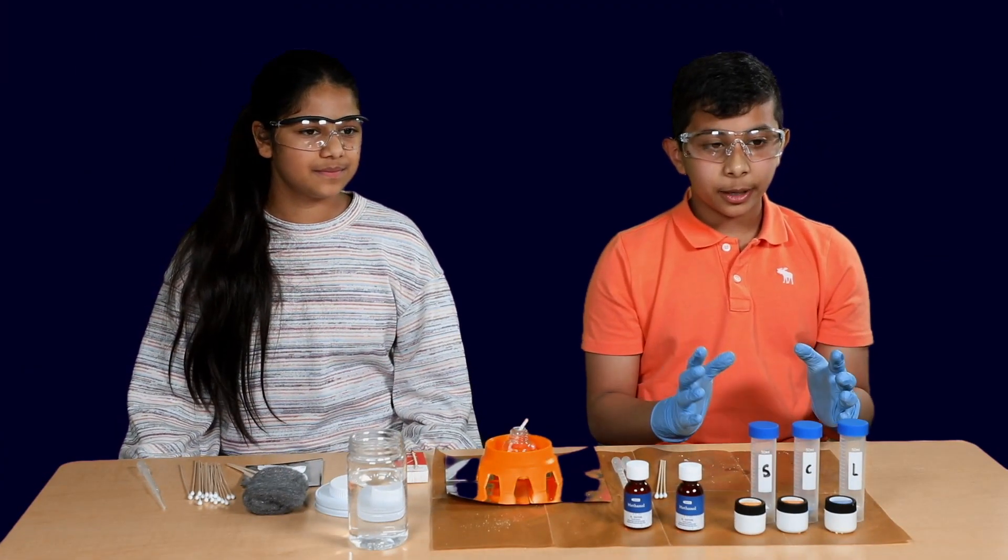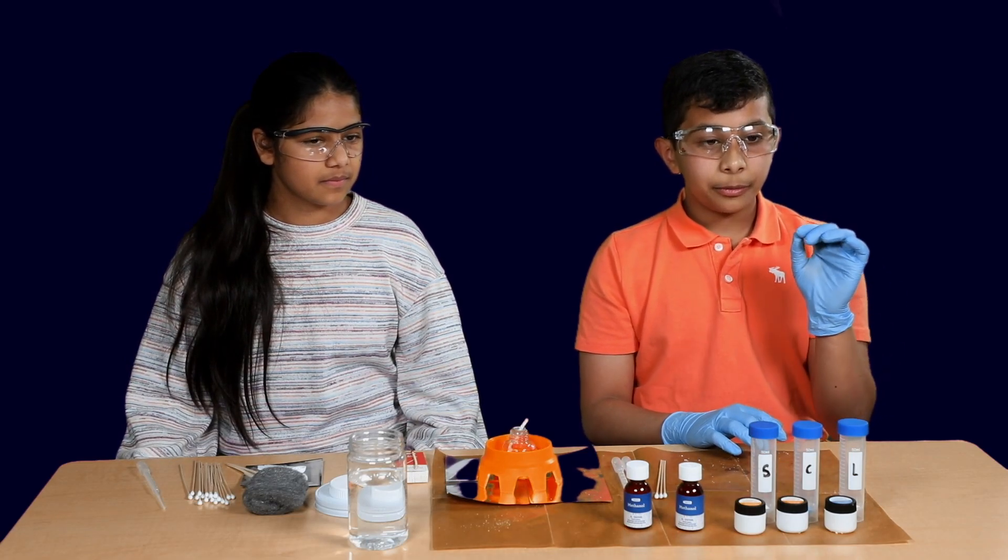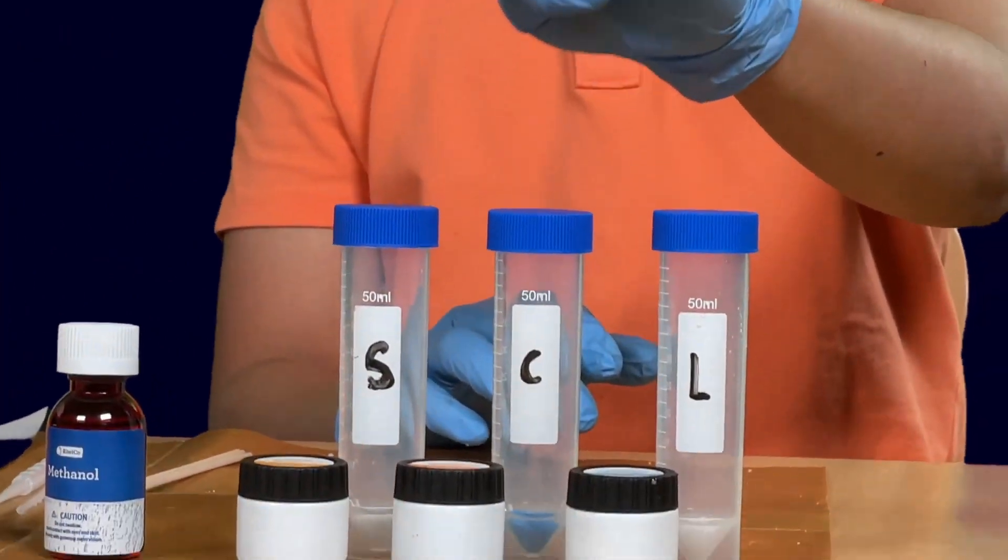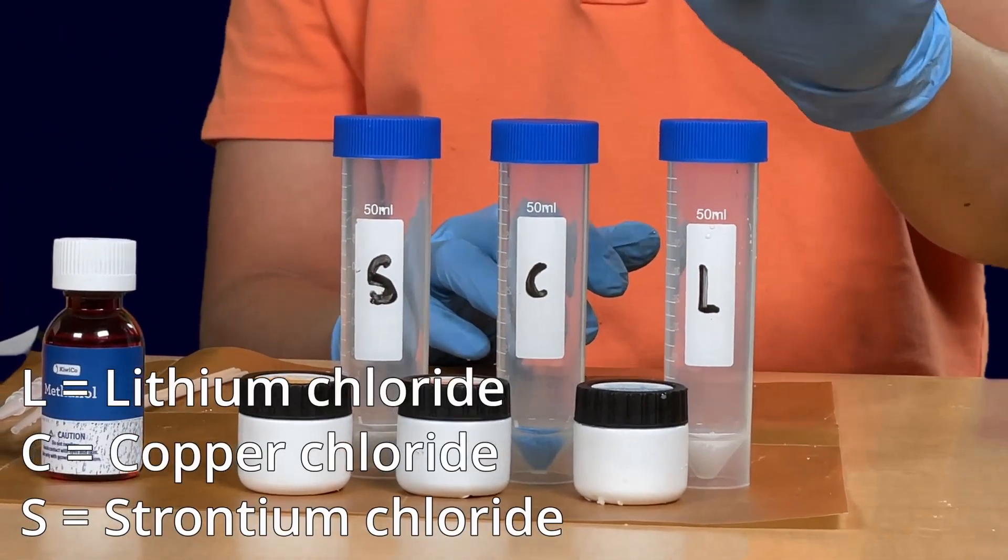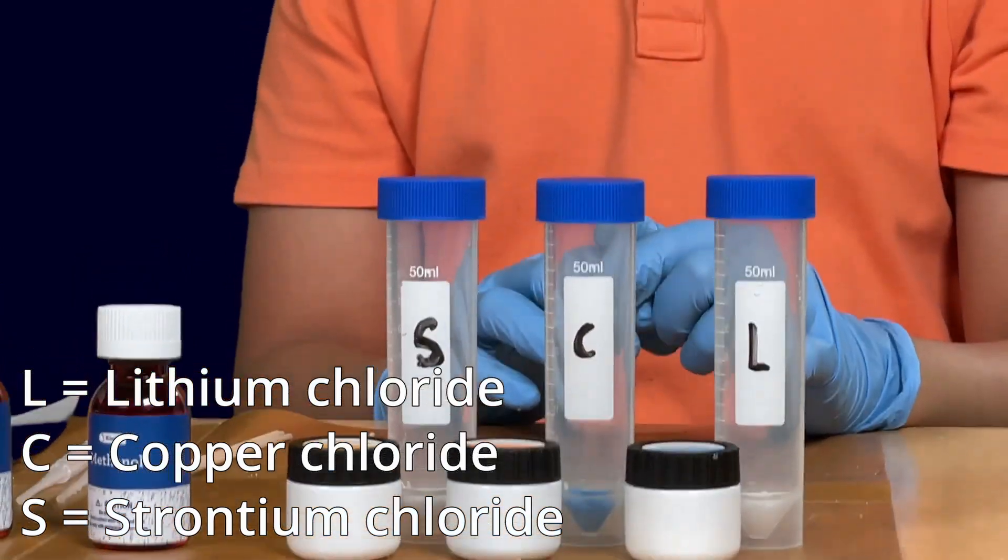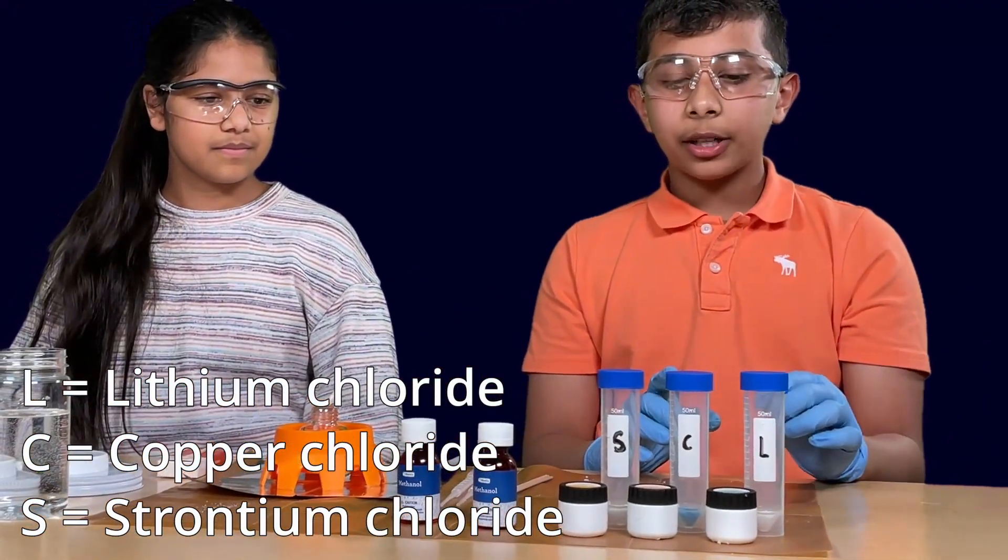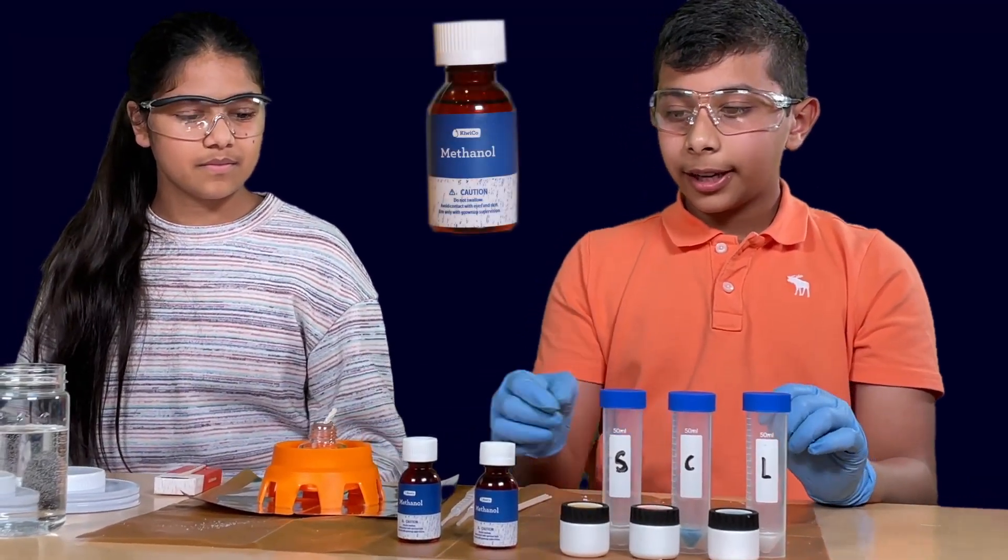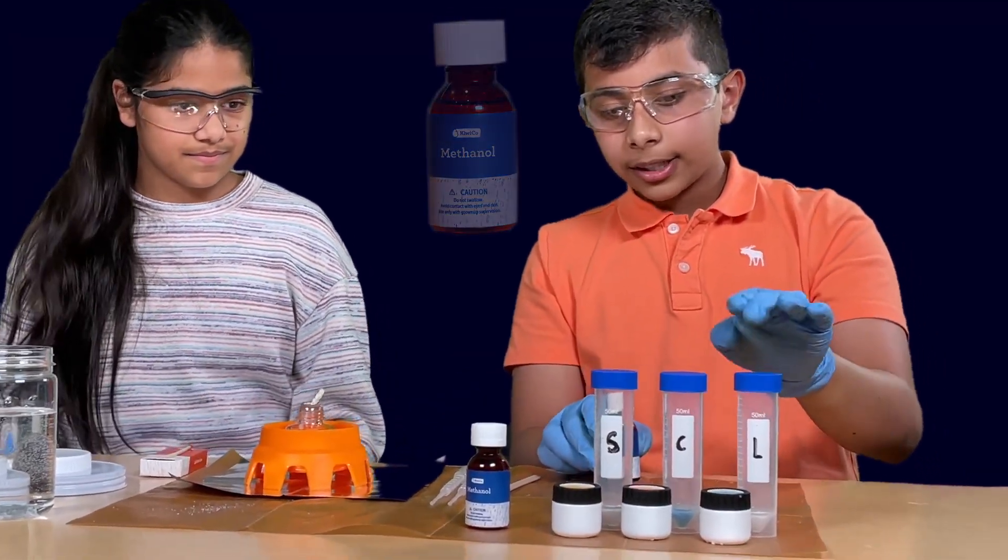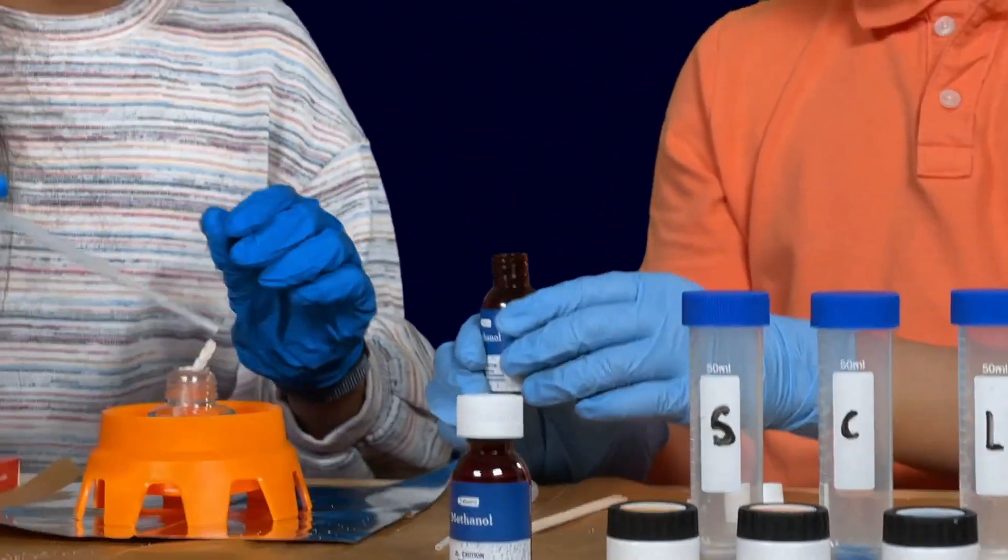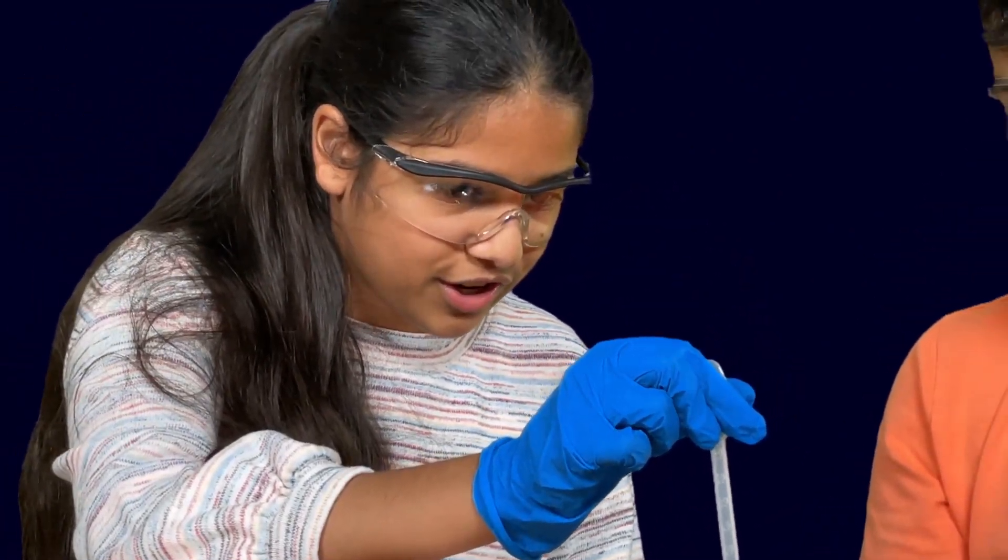Yeah, that was an interesting find. So for this experiment, we first got three test tubes, one labeled L, C, and S. L for lithium chloride, C for copper chloride, and S for strontium chloride. And then we put each of the corresponding chemicals inside the tubes. Then, we're going to get some methanol and put 10 milliliters in each tube. So, well, let's start with that. Sonvi, would you like to do that? Sure.